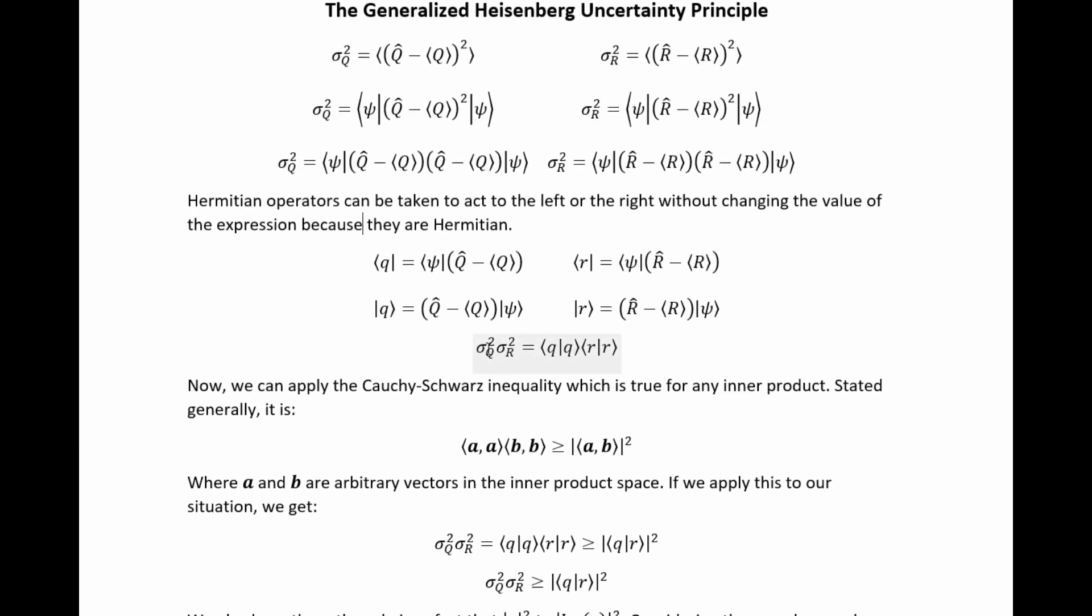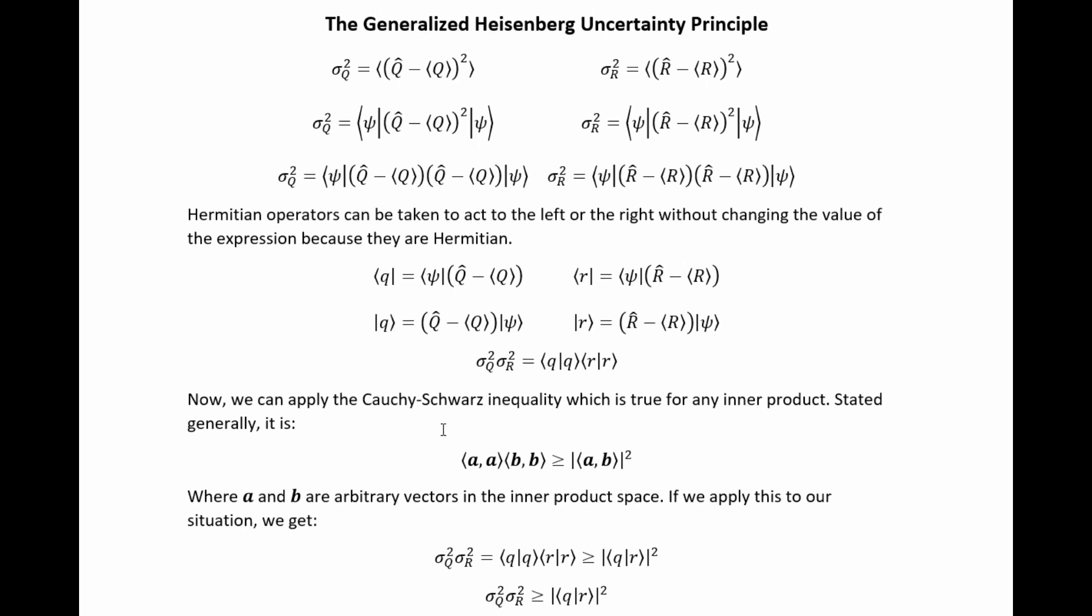Now, this is an equality. And it turns out there are two inequalities we're going to use to rewrite this side of the expression in a useful way. And that will turn our equality into an inequality. And the final answer, of course, the generalized Heisenberg uncertainty principle will take the form of an inequality.